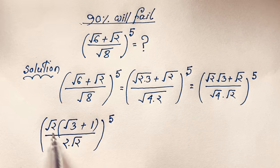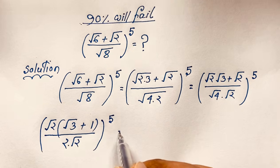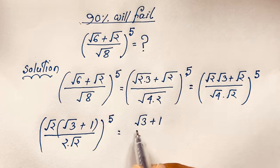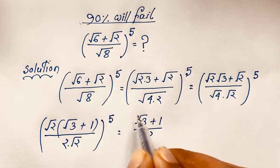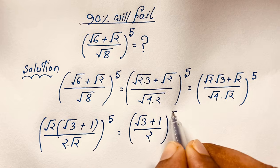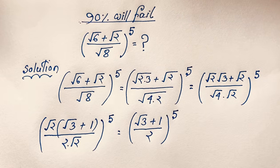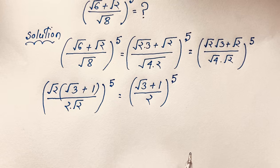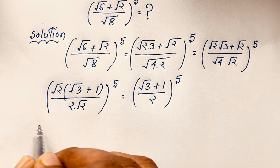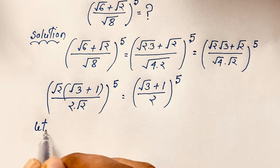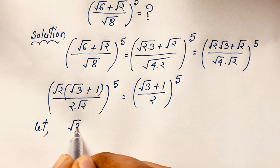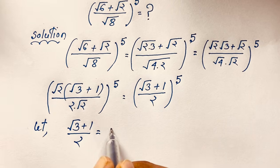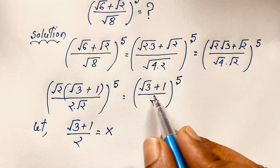The square root 2 terms cancel out, and we find it simplifies to (square root 3 plus 1) over 2, all to the power 5. Now let x equal (square root 3 plus 1) over 2, so our target is x to the power 5.